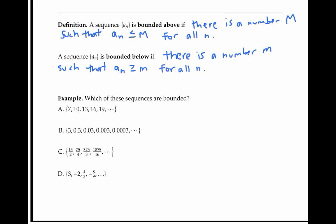A sequence is bounded if it's both bounded above and bounded below. In other words, all the terms are trapped in between an upper and lower bound.